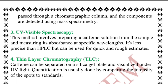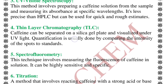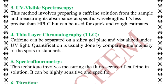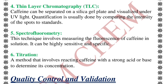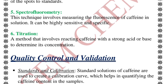The next technique is UV-Visible spectroscopy, which we have already seen in the previous video. Here we observe specific wavelength absorbance in the sample. We also have thin layer chromatography, where a silica gel plate is used to separate caffeine and it is observed under UV light. Spectrofluorometry measures the fluorescence of caffeine in solution — it is highly specific, sensitive, and widely useful. Finally, we have the titration method, which is old but a very versatile technique usable daily.